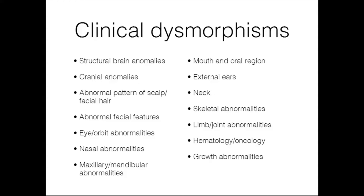Maxillary and mandibular abnormalities may include cleft palate or a very high arched palate. In the mouth and oral region, we often see a small mouth or a relatively large tongue. External ears are often low-set. The neck can be short or have a webbed appearance. Skeletal abnormalities like scoliosis are common, as are limb and joint abnormalities such as short digits and short limbs. There may also be hematological issues like anemia, and growth abnormalities including obesity in these populations.